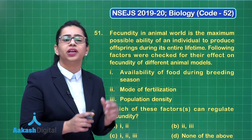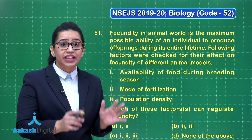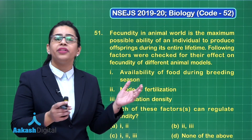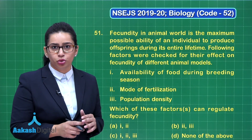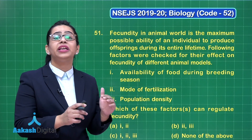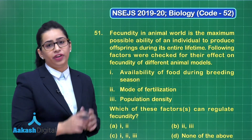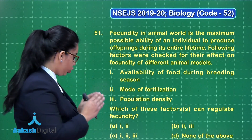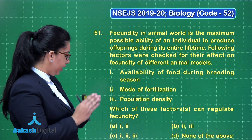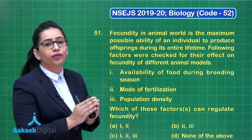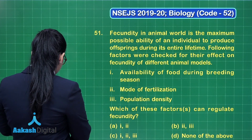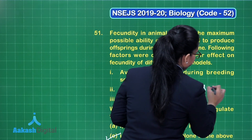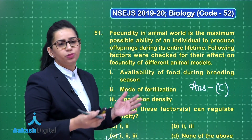The third factor is population density — the number of organisms per unit area. Low density will result in reduced fertility because there will be difficulty in finding a mate for sexual reproduction, and secondly there will be increased inbreeding, which will eventually decrease fecundity. So all of these factors affect fecundity. The options are: A (1 and 2), B (2 and 3), C (1, 2, 3), D (none of the above). The answer is option C — all three factors regulate fecundity.